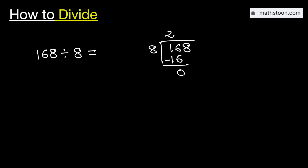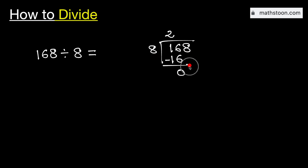Now see that this 0 is less than 8, so we will bring down this number 8 here. Now we know that there is no meaning of zeros on the left, so we will remove this 0.